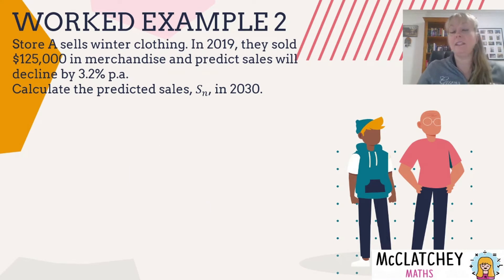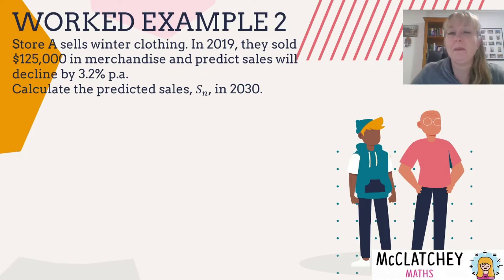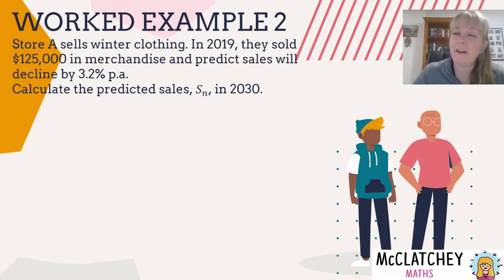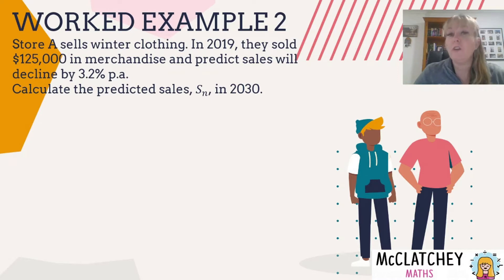Our next worked example is a model of decline. Before we proceed, I want to note that even though this is a geometric sequences video, in an exam you must stop and identify whether a problem is arithmetic or geometric. Growth or decline by a percentage indicates a geometric sequence. If the values are declining or increasing by a fixed amount of dollars or people, you would use an arithmetic sequence principle.